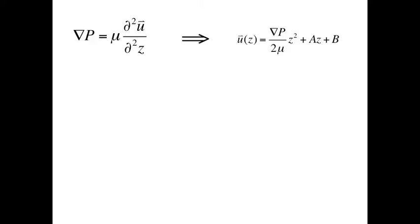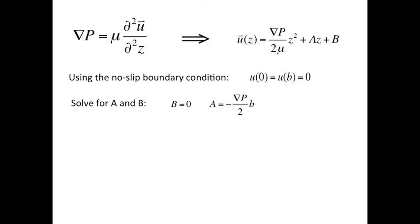If we integrate this equation twice, it gives us the equation in the top right corner. Using the no-slip boundary condition, we can solve for the constants B and A. Now plugging those values back into U, we get the equation as seen.